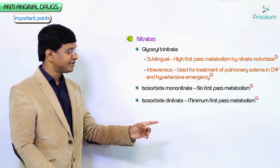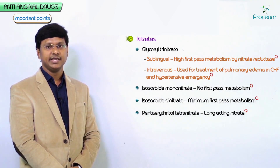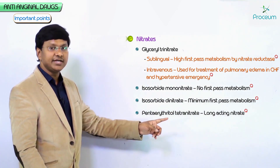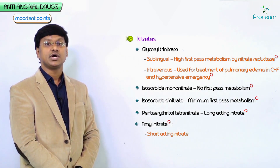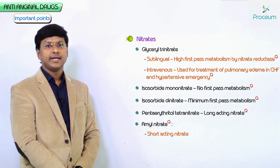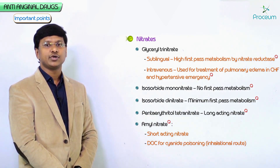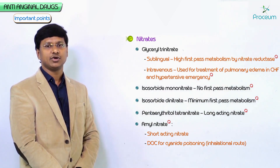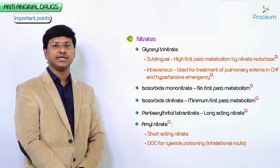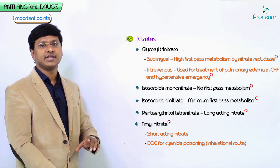Isosorbide mononitrate has no first-pass metabolism, while isosorbide dinitrate has minimum first-pass metabolism. Among all nitrates, the long-acting nitrate is pentaerythritol tetranitrate, while the short-acting nitrate is amyl nitrate. The important use of amyl nitrate is that it is the drug of choice for cyanide poisoning by inhalational route.